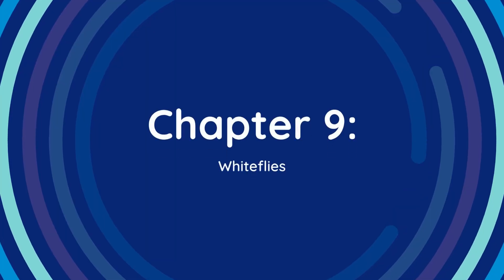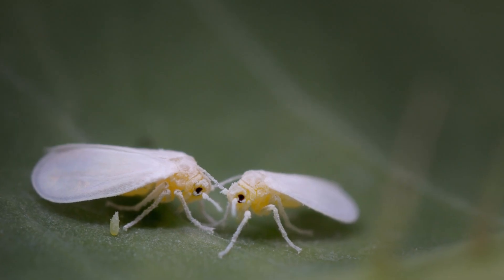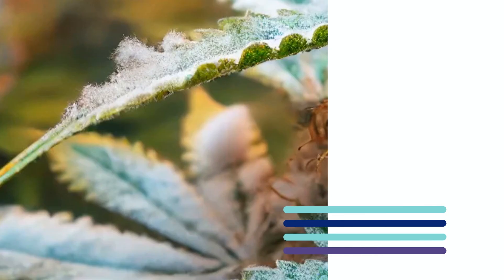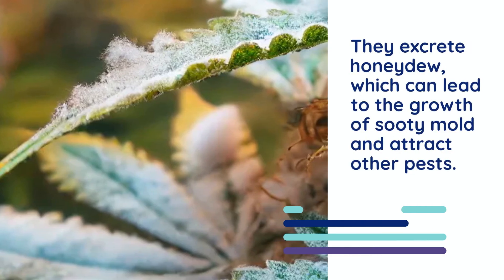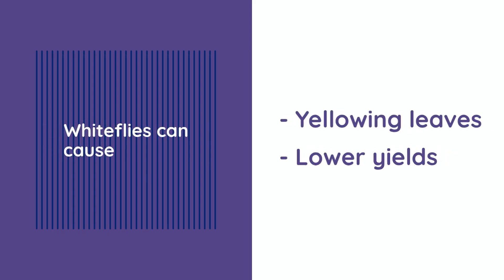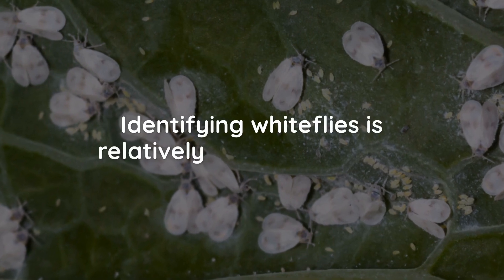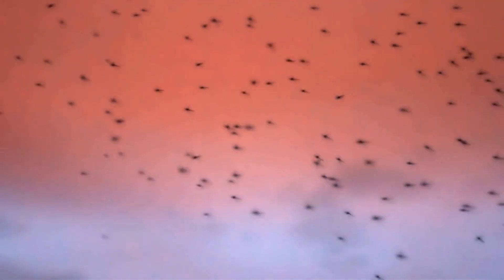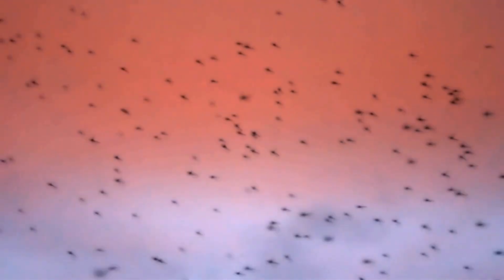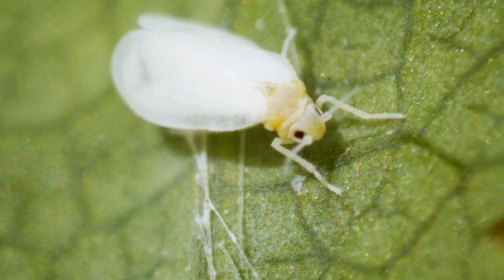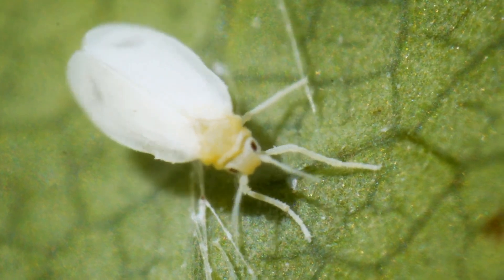Chapter 9: Whiteflies. Whiteflies are small, white-winged insects that feed on the underside of cannabis leaves. They excrete honeydew, which can lead to the growth of sooty mold and attract other pests. Whiteflies can cause yellowing leaves, reduced vigor, and lower yields. Identifying whiteflies is relatively easy due to their visible presence on the undersides of leaves. When disturbed, they will fly up in a cloud, making them hard to miss. The presence of honeydew and sooty mold can also indicate a whitefly infestation.